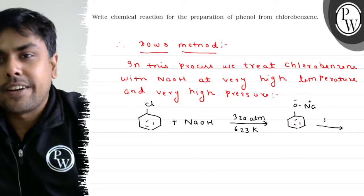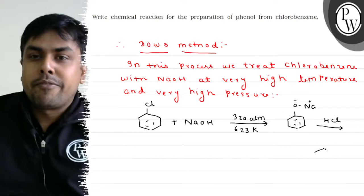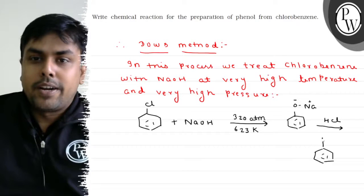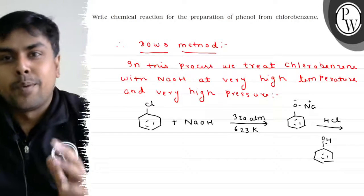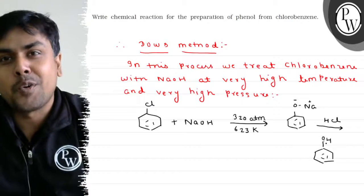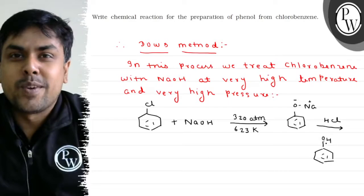Now I will treat it with dilute HCl and finally I will get my desired product and this is my desired product phenol. So this is how phenol is synthesized from chlorobenzene. I hope you understood the question.